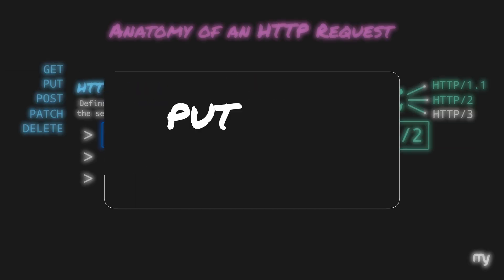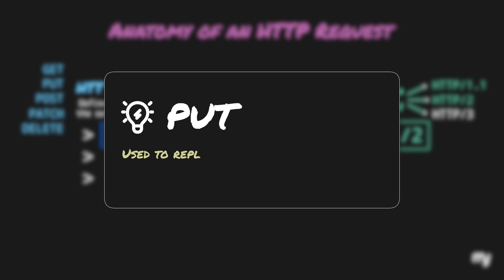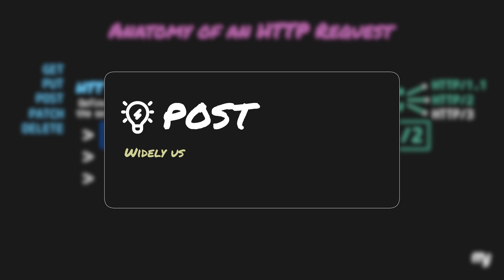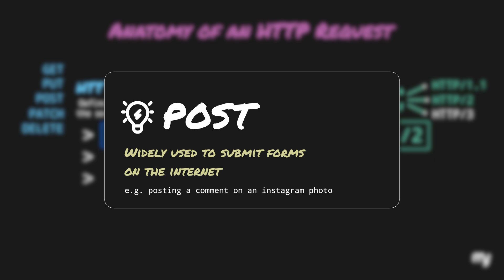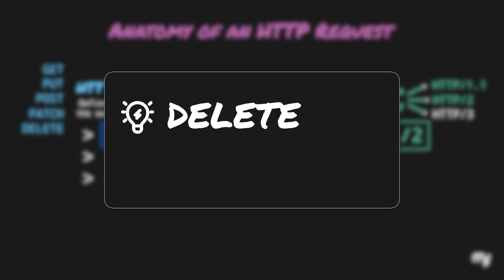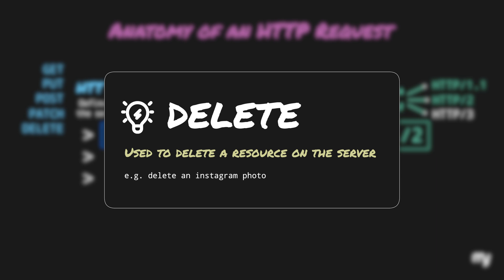For example, PUT is used to replace a resource on the server, like replacing an old address with a new one. POST, which has been widely used to submit forms on the internet, can be used to perform a variety of operations, like posting a comment on an Instagram photo. PATCH is used to update an existing resource. DELETE is used to delete a resource on the server, like deleting an Instagram photo.